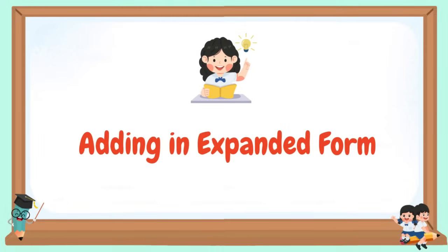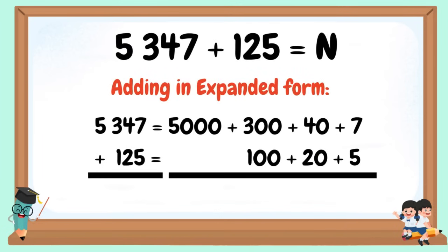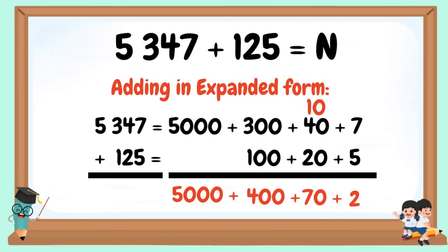Adding in expanded form: 5,347 + 125. 5 + 7 = 12. Bring down 2 and carry 10. 40 + 20 + 10 = 70. 300 + 100 = 400. Bring down the 5,000. 5,000 + 400 + 70 + 2 = 5,472. This is our sum or our answer.